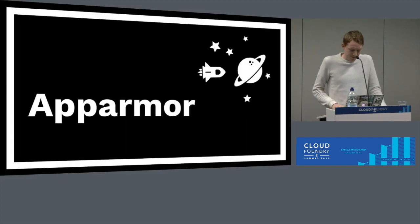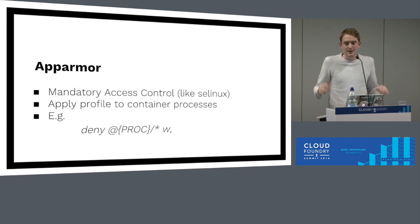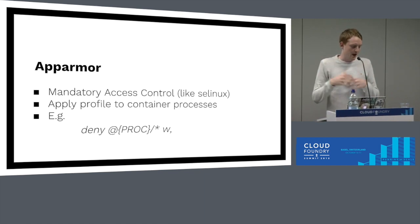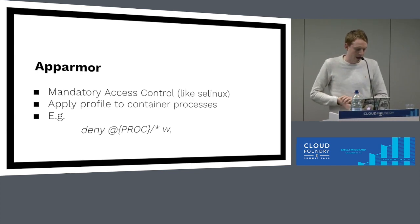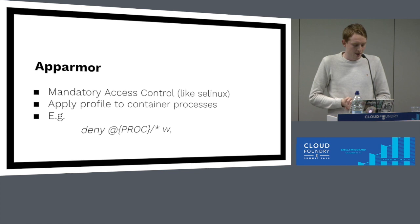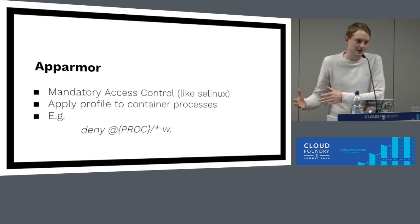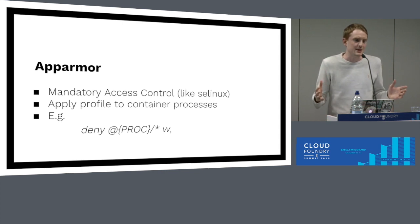Finally, we have AppArmor. AppArmor allows us to restrict containerized processes even further. It's a form of mandatory access control, kind of like SELinux. The way it works is you create an AppArmor profile which contains a bunch of rules — for example, "deny @{PROC}/*/w", which means the process is not allowed to write to any file inside the proc filesystem. We build up these profiles and apply them to containerized processes. Even if they break out of isolation, we're limiting the damage that can be done.